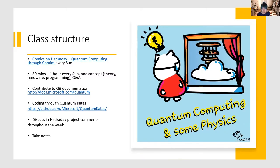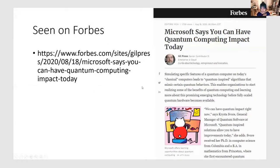I always let people know this is where you can find information - all of the past recordings and slides. The official documentation we use is from Microsoft, the Q# documentation. We have been using the katas for training on content, so if you missed any of the previous classes, these are the places you can go. I'm also very proud to announce that we were on Forbes - the quantum team's work was featured there, and our class was mentioned there including the comics. Check it out - this is on Forbes October 18th on quantum.